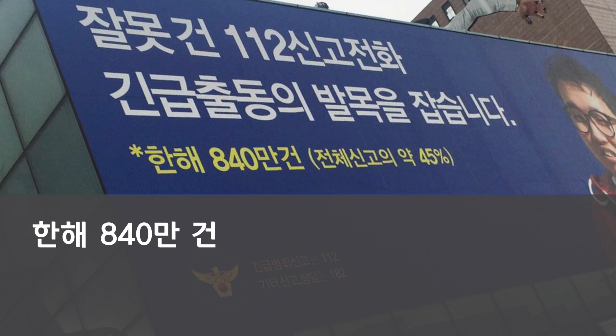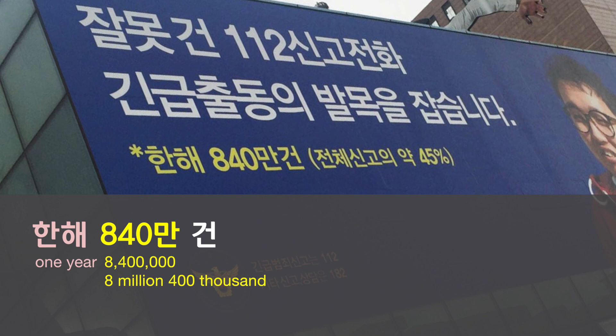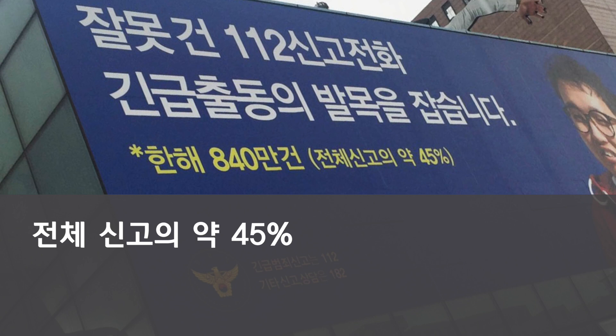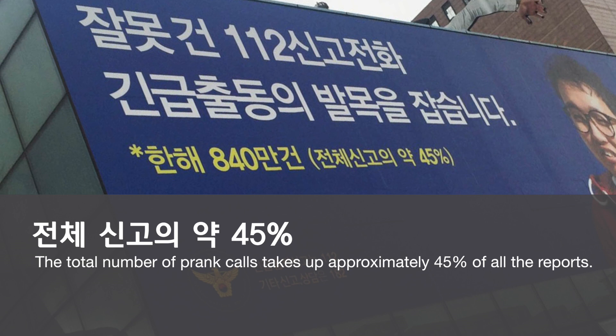Below this line you see a shorter phrase: 한해 840만 건, 전체 신고의 약 45%. 한해 means one year. 840만 — since 만 means 10,000 — equals 8,400,000. 건 is a counter for cases, incidents, and accidents. So the total number of prank calls they receive is 8,400,000 per year. In parentheses it says 전체 신고의 약 45% — this takes up approximately 45% of all reports. Let's not do that.